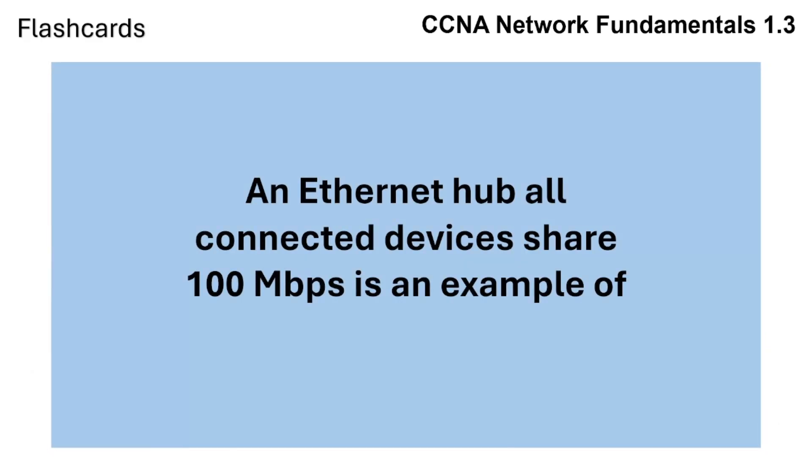An Ethernet hub where all connected devices share 100 Mbps is an example of what?